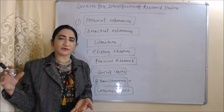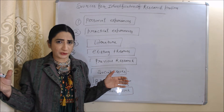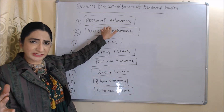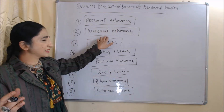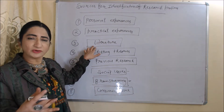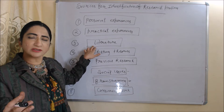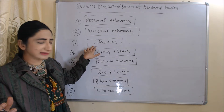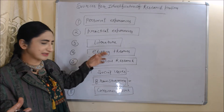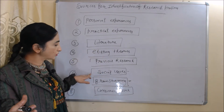Now we will see sources for identification of a research problem — meaning from where we can find our research problem. We can find a research problem based on our personal experiences, based on our practical experiences. Next is literature — you can take an idea from books, newspapers, or articles. Similarly, you can find a research problem from existing theories or from your previous research.